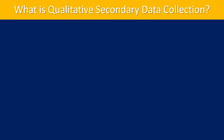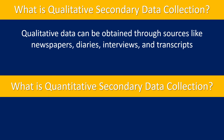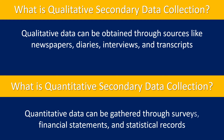Secondary data can be both qualitative and quantitative. Qualitative data can be obtained through sources like newspapers, diaries, interviews, and transcripts. Quantitative data can be gathered through surveys, financial statements, and statistical records.